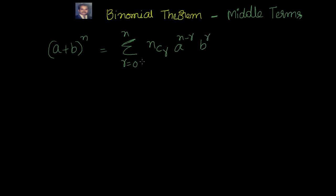If we just put r equal to 0, we get nC0 · a^n · b^0. If r equal to 1, we get nC1 · a^(n−1) · b^1. Now, how to find the middle term depends on two things: the value of n. If n is even we will have one set of values; if n is odd we will have another set.